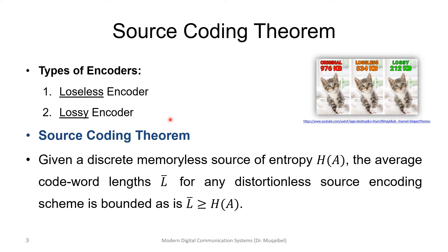Let's also quickly recall the source coding theorem. Given a discrete memoryless source of entropy H(A), the average codeword length L-bar for any lossless source encoding scheme is bounded by the entropy — it has to be greater than or equal to the entropy. The best we can do is to have the minimum length equal to the entropy.